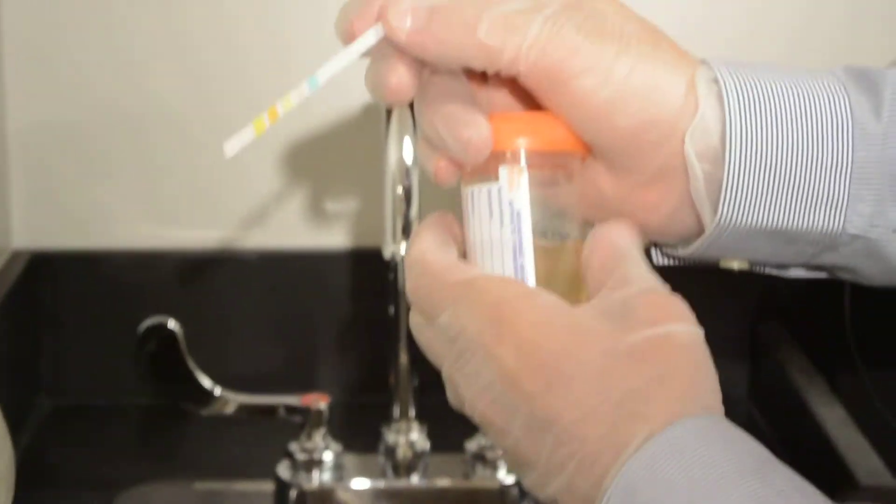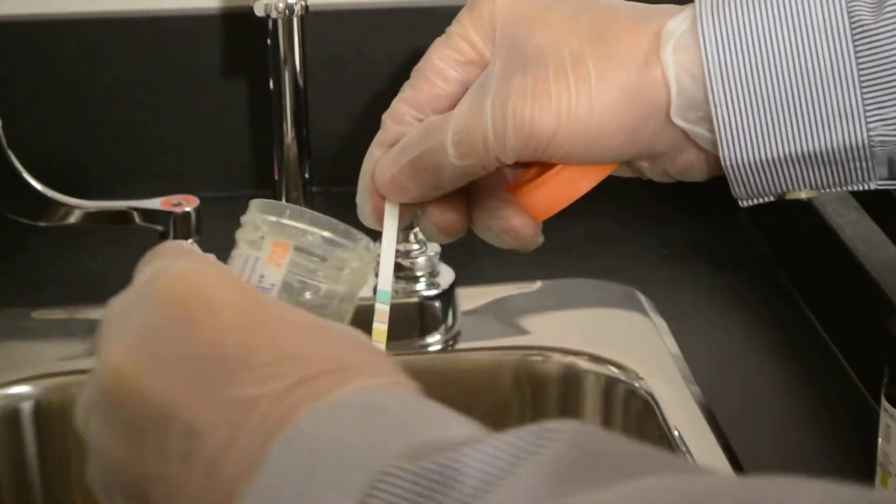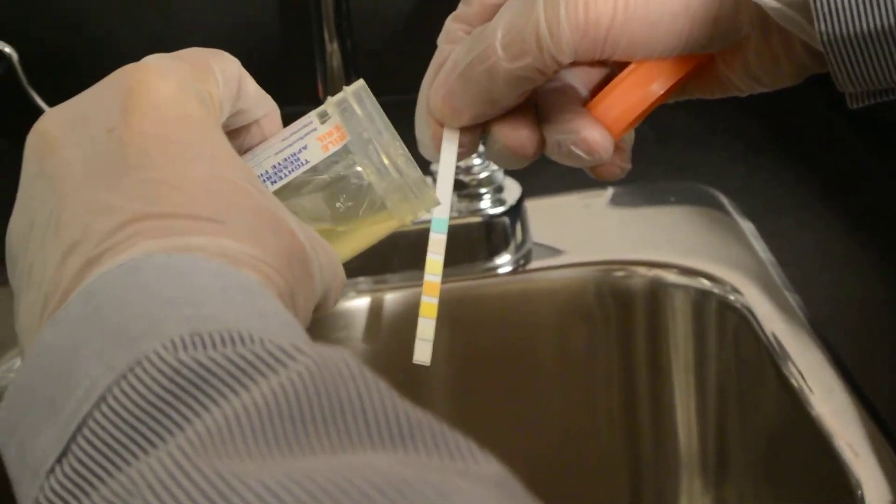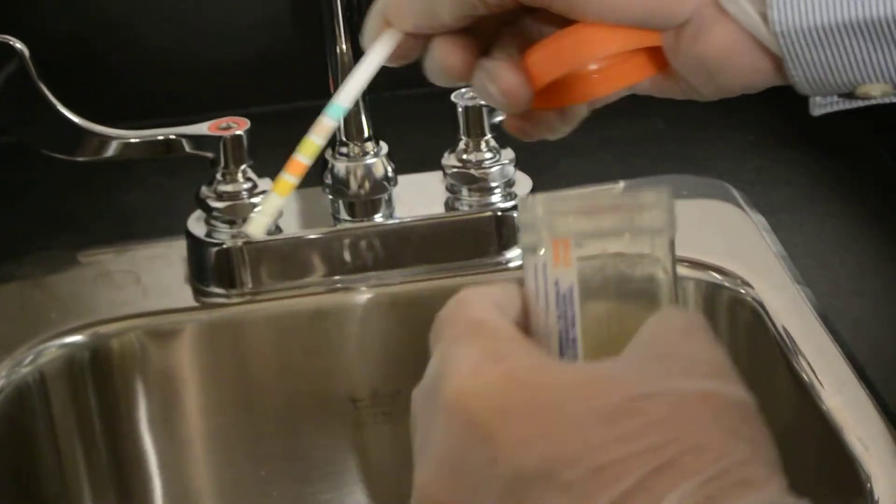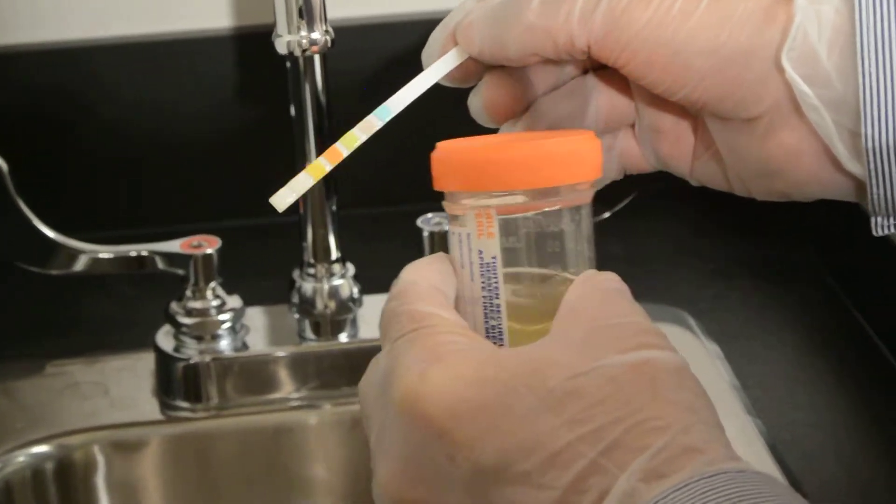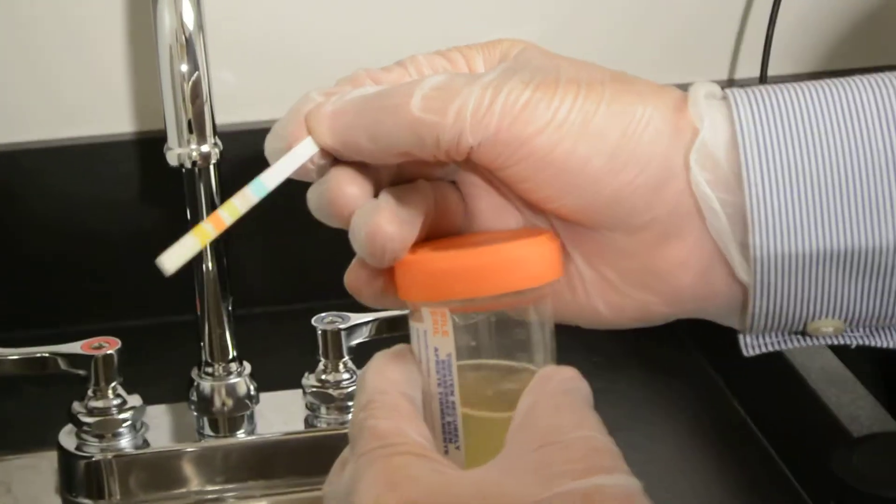You take the urine container and drip it on the strip as opposed to putting the strip inside. That's a common mistake - putting it inside the urine.